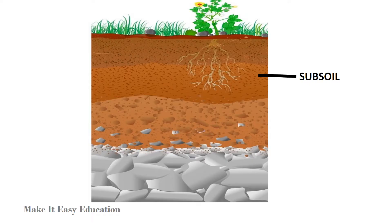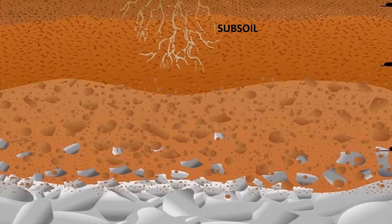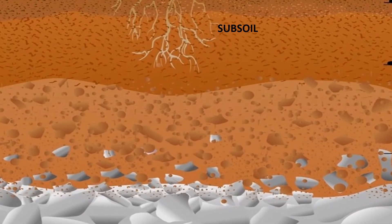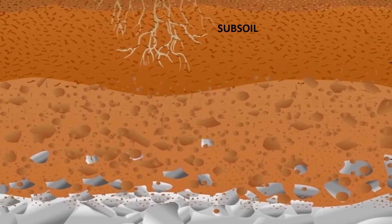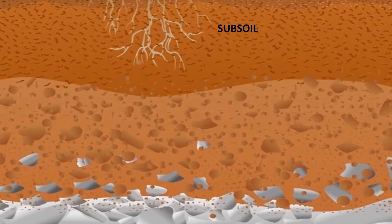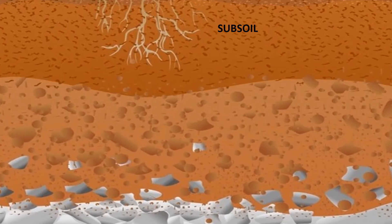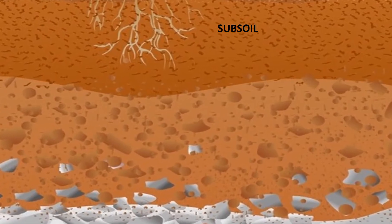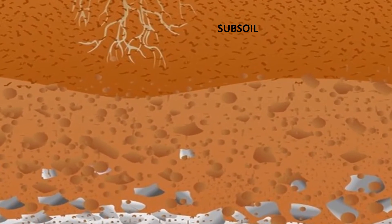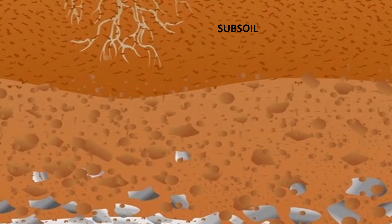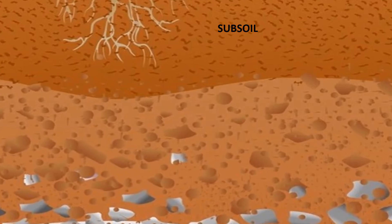Subsoil is the middle layer of soil, present below the topsoil. Subsoil is hard and compact, so only the roots of big and strong plants can reach here. Subsoil is rich in minerals and also contains small pieces of rocks.